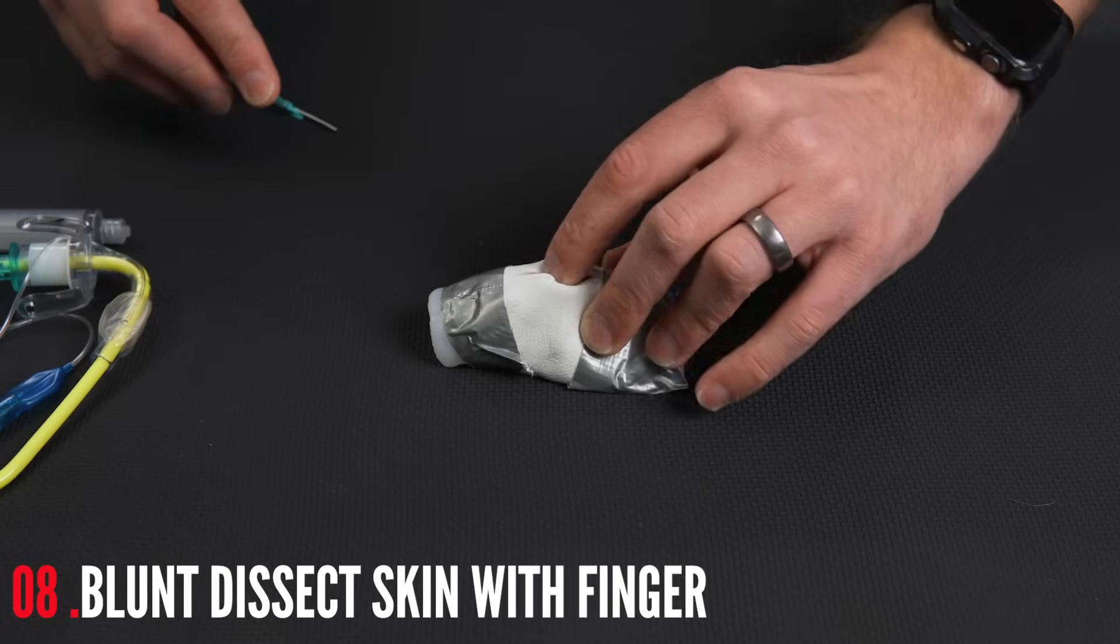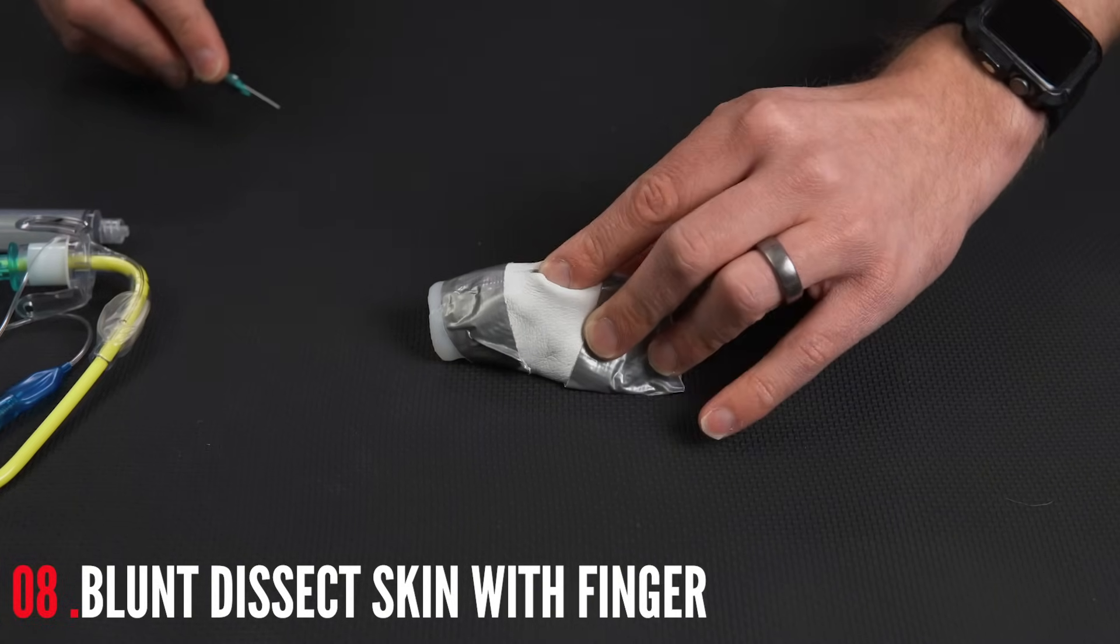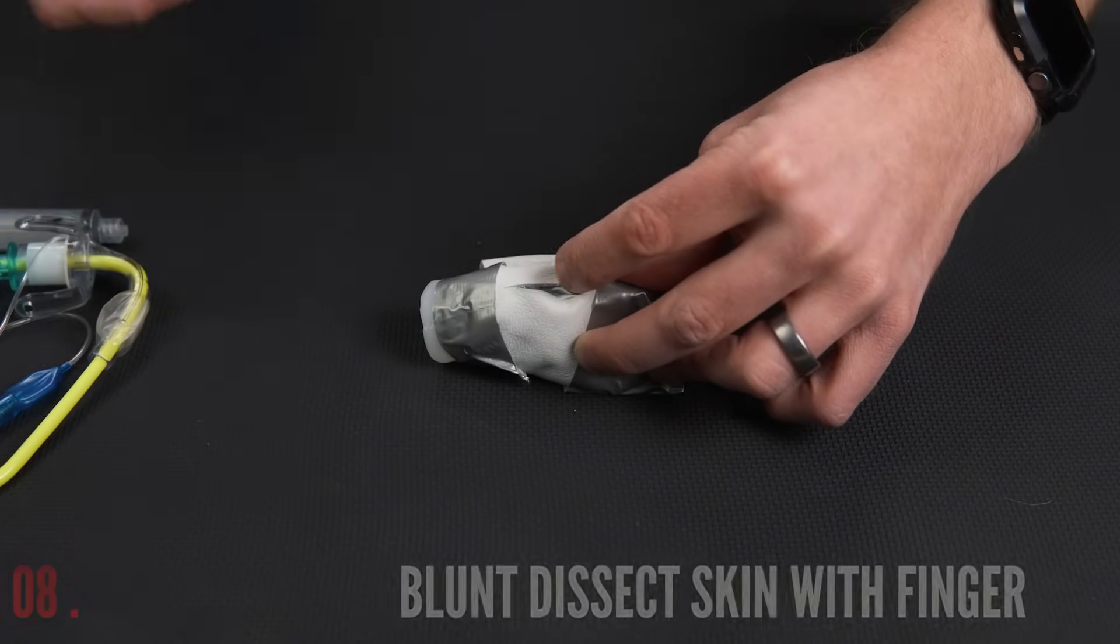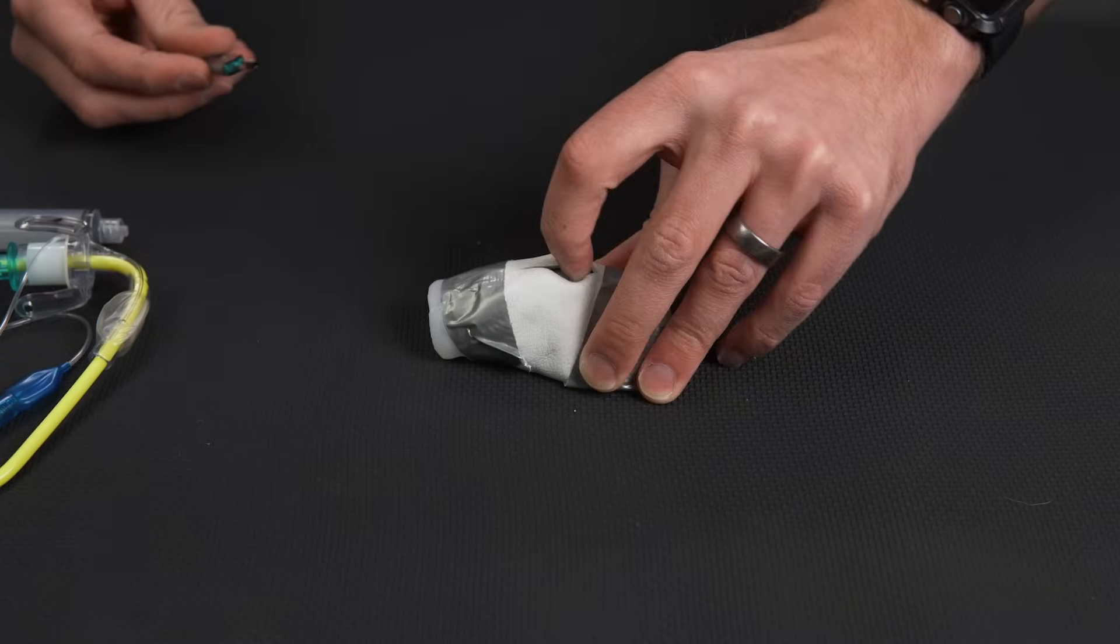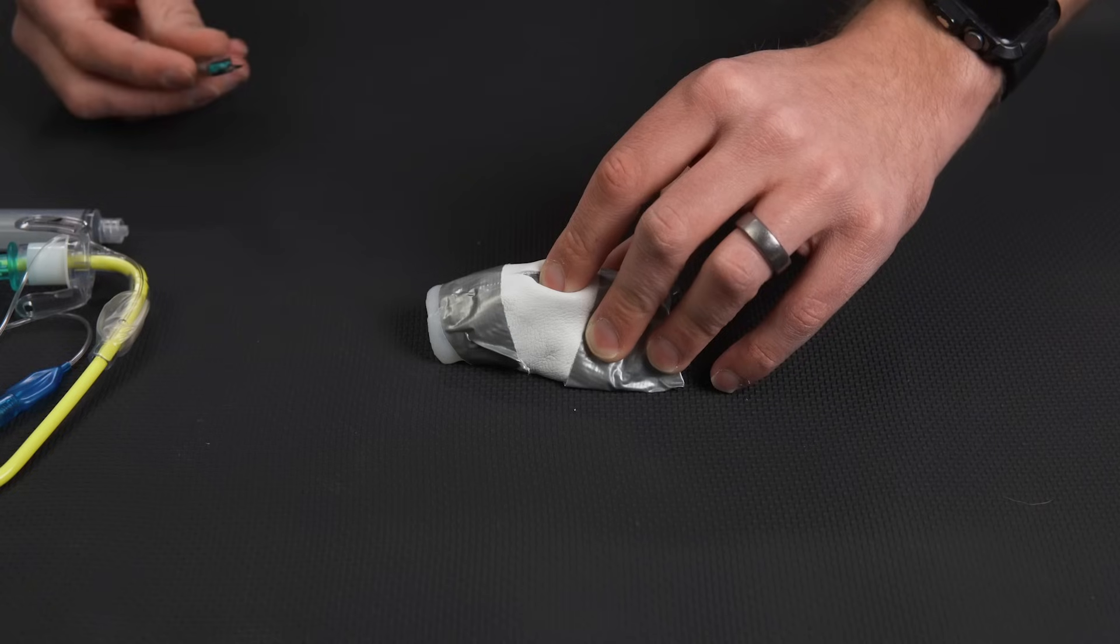I'm going to take my finger and I'm going to blunt dissect with that finger, making sure that I can actually feel the membrane underneath it. If you actually see that there, you can see the quote membrane, the duct tape I have in place. So we've blunt dissected down with that finger and that finger is going to hold that steady.